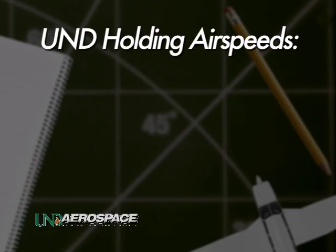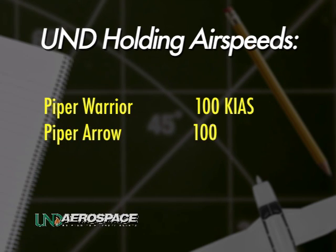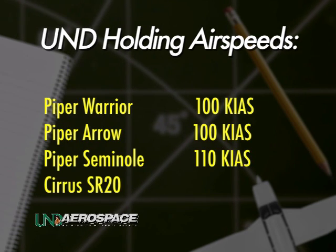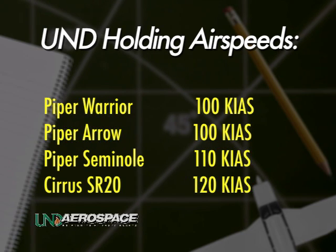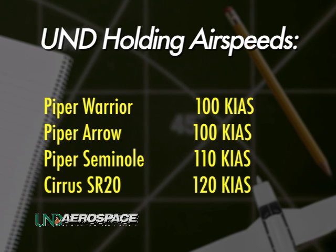At UND Aerospace, each aircraft has a standardized recommended holding speed. In the Piper Warrior, holding should be executed at 100 knots; in the Aero at 100 knots; the Seminole at 110 knots; and the Cirrus SR20 at 120 knots.